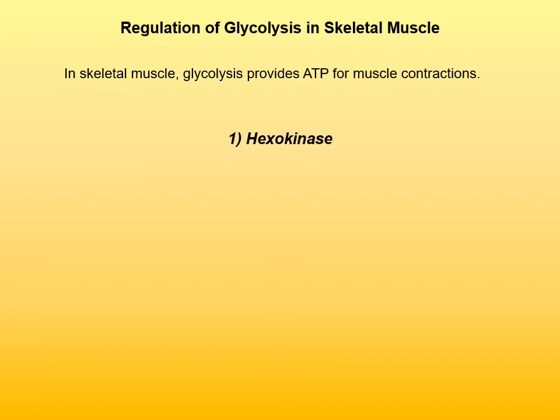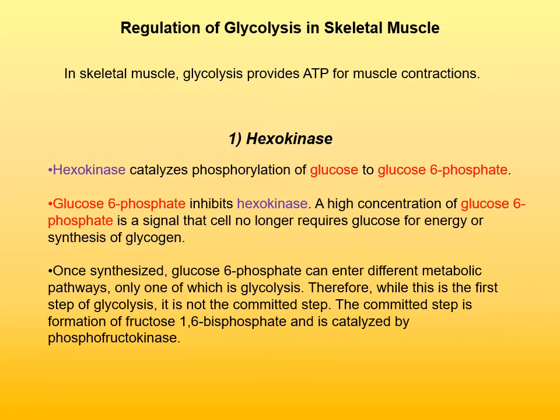The first regulation point is regulation of hexokinase. Hexokinase catalyzes phosphorylation of glucose to glucose-6-phosphate, and regulation is relatively simple — it's by feedback inhibition. The reaction product, glucose-6-phosphate, inhibits hexokinase. A high concentration of glucose-6-phosphate is a signal that the cell no longer requires glucose for energy and also no longer requires glucose for synthesis of glycogen. And so, phosphorylation of glucose stops.